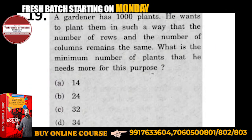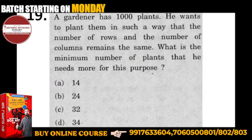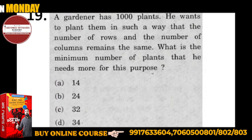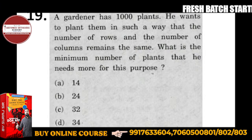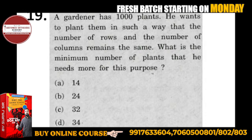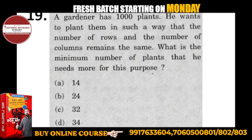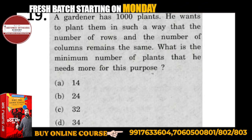Question number 19. A gardener has 1000 plants. He wants to plant them in such a way that the number of rows and the number of columns remains the same. What is the minimum number of plants that he needs more for this purpose? Let's understand what number of rows and number of columns means.